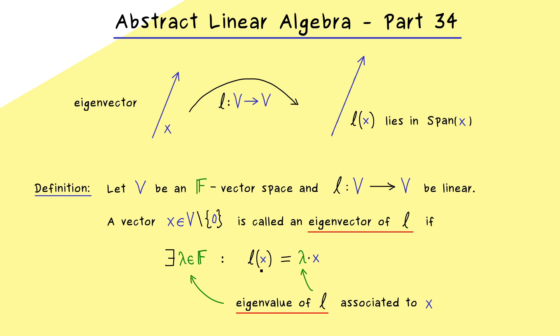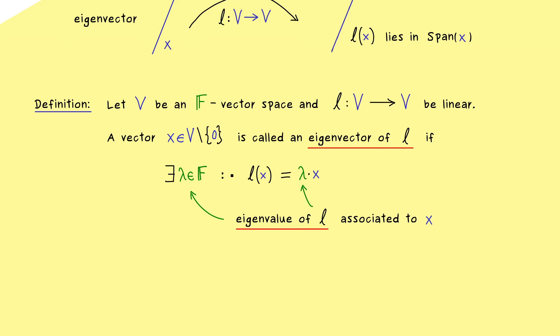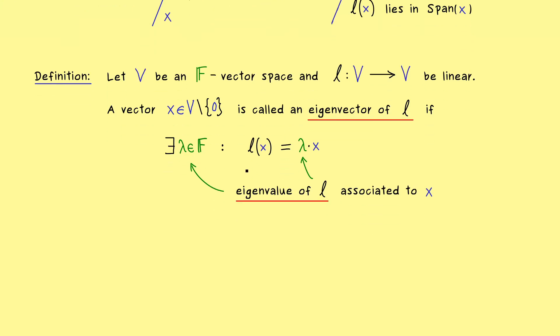However, as you might already know, for an n dimensional vector space we will find at most n different eigenvalues. And indeed this finite dimensional case is the one we often deal in linear algebra with. But I think it's already good to know that this is the general definition for any vector space in any linear map.